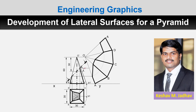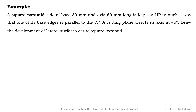Hello everyone. In this video I will explain how to draw the development of lateral surfaces for a pyramid. So let us take an example. A square pyramid with side of base 30 mm and axis 60 mm long is kept on a horizontal plane such that one of its base edges is parallel to the vertical plane. A cutting plane bisects its axis at 45 degrees. Draw the development of lateral surfaces of the square pyramid.